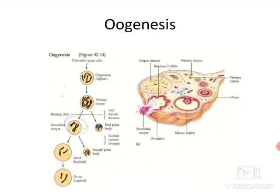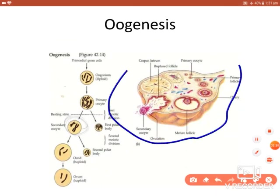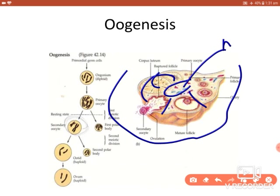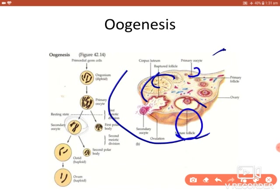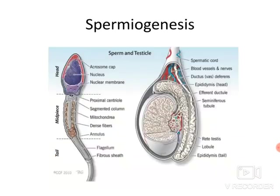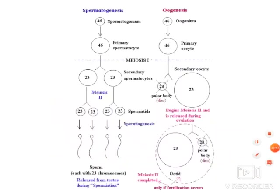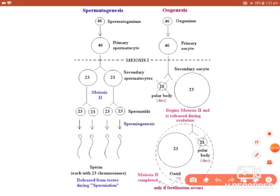Coming to oogenesis: here you can see a section of the ovary. The central part is the medulla, and the outer area is the cortex. In the cortex, you can see different stages of cells from the primary oocyte to the mature follicle. The steps of oogenesis are similar to what was explained for spermatogenesis.